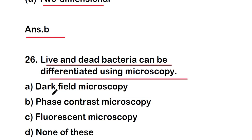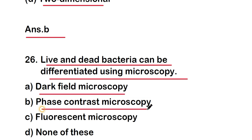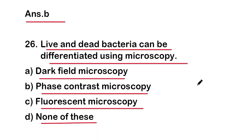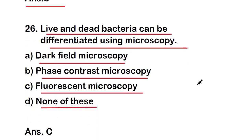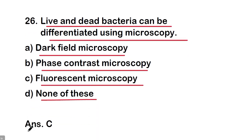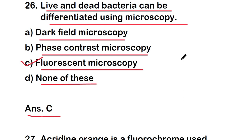Next question: live and dead bacteria can be differentiated using dark field microscopy, phase contrast microscopy, fluorescent microscopy, or none of these? The right answer is option C — fluorescent microscopy is used to differentiate live and dead bacteria.